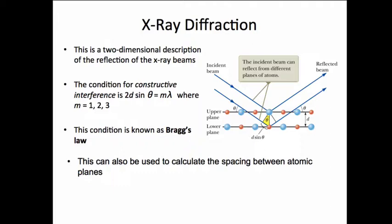The condition for constructive interference to get a maximum in the pattern is that 2d sin theta is a whole number of wavelengths. So 2d sin theta equals m lambda. This condition is known as Bragg's law.